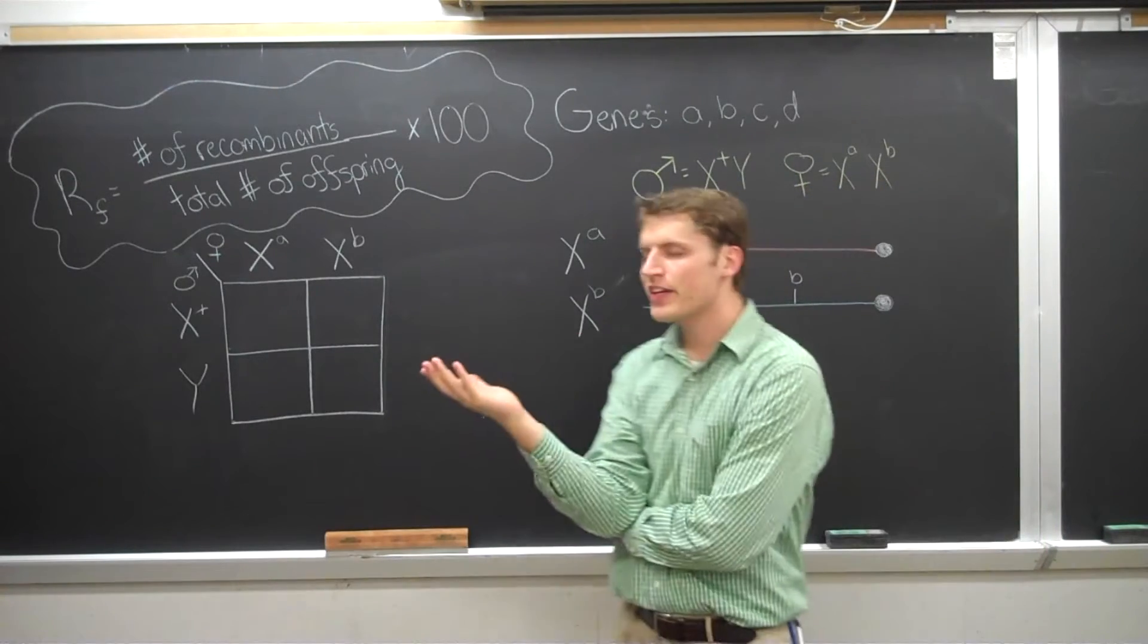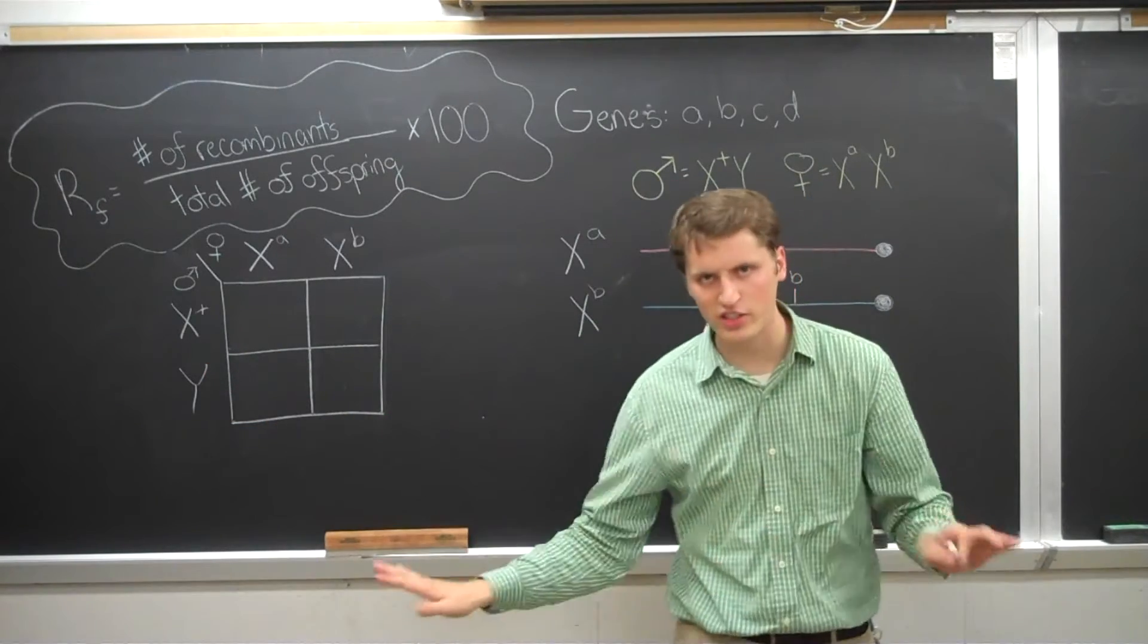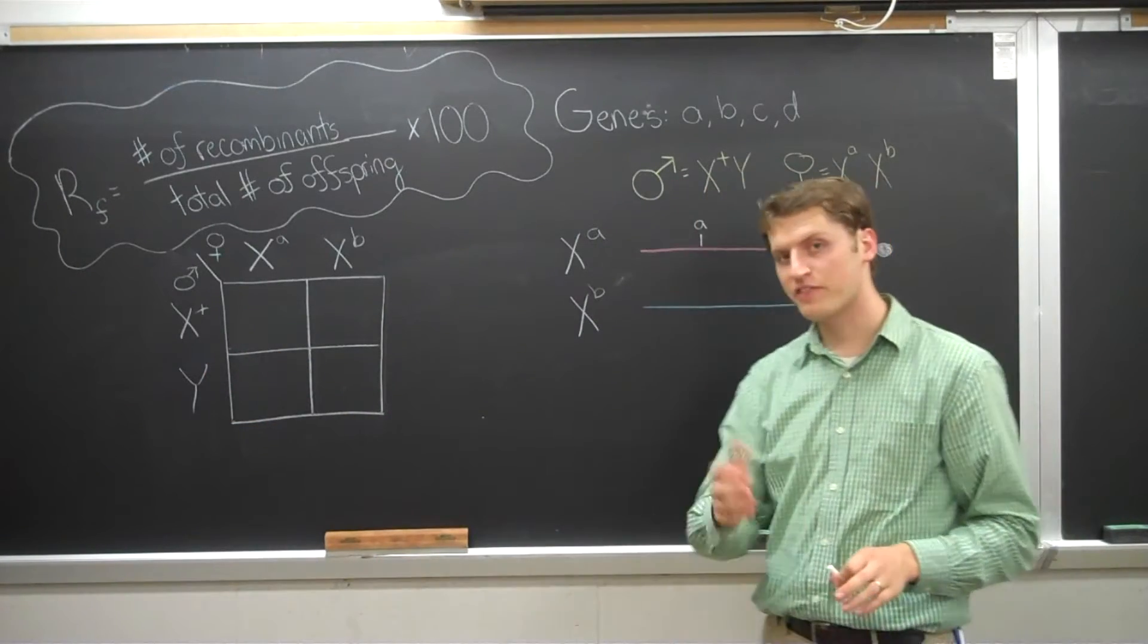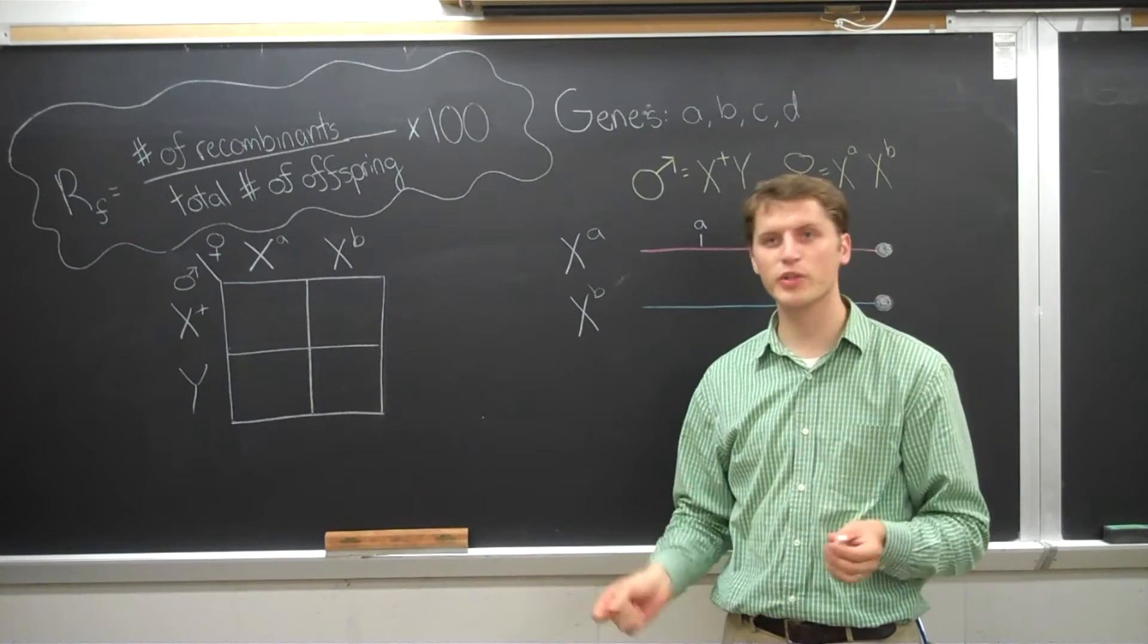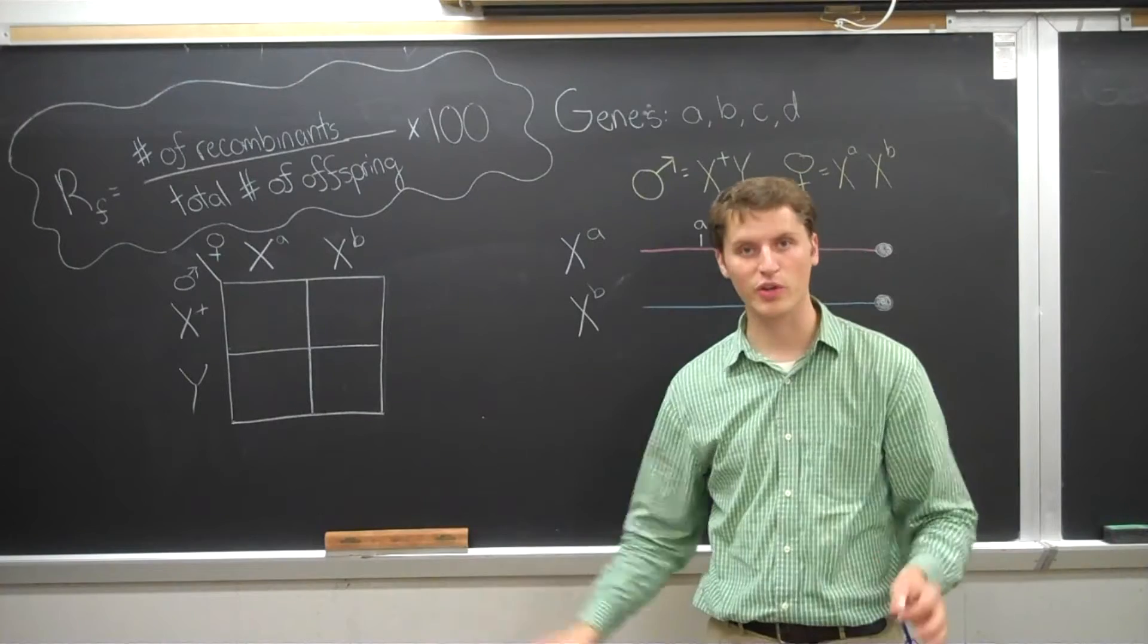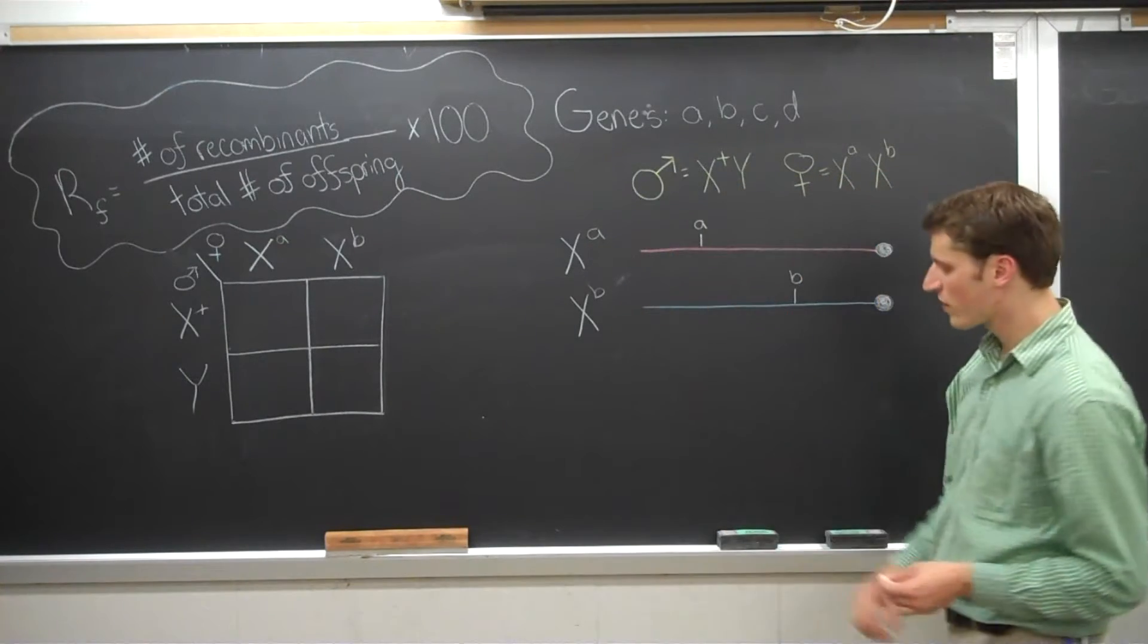Now, just to let you know, recombination is not going to occur between the X and the Y in the males. We don't consider recombination in the male at all. In fact, in fruit flies, recombination in males is virtually nonexistent. So we can ignore it altogether. But it does occur in the females. So let me illustrate it here.